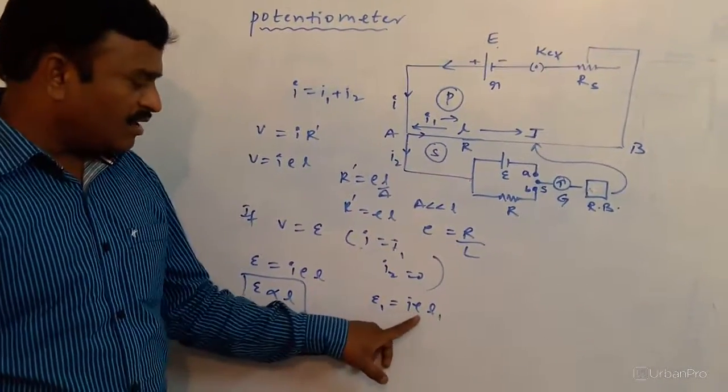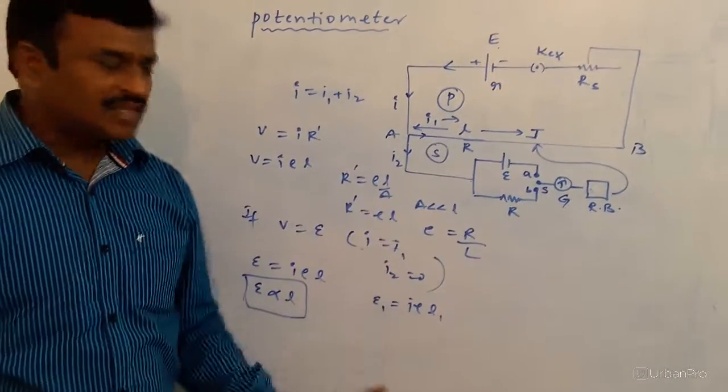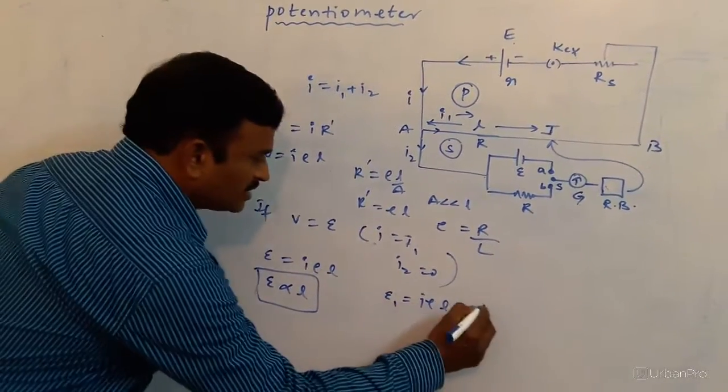That is, EMF is E1, I is the current, ρ is specific resistance, and the balancing length of particular cell is L1. Similarly, let us take this as equation 1.